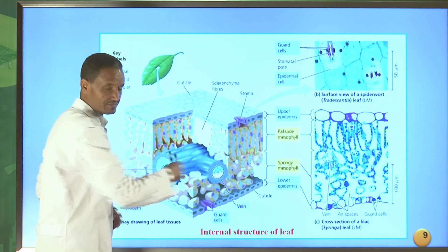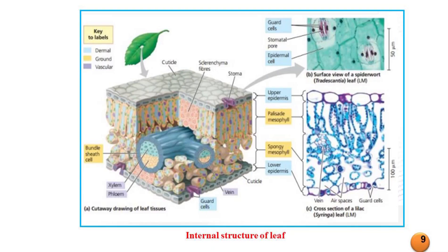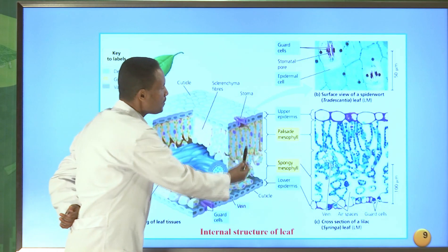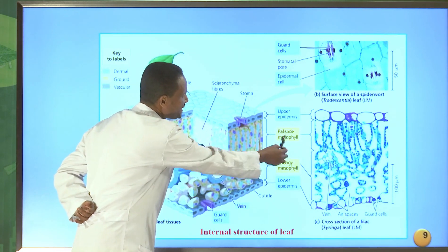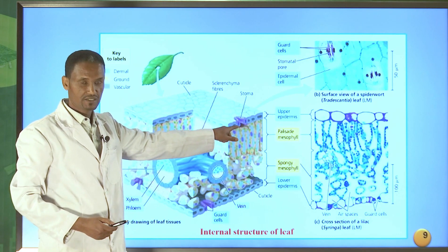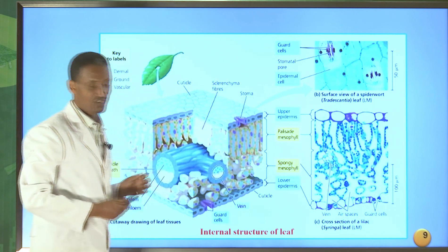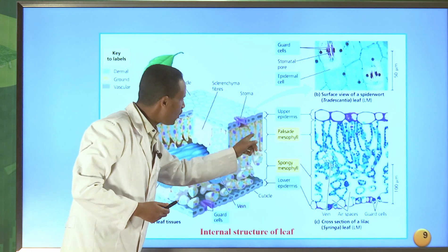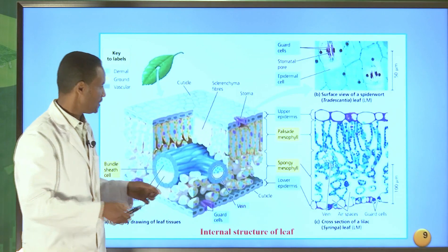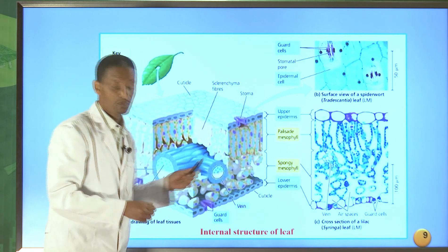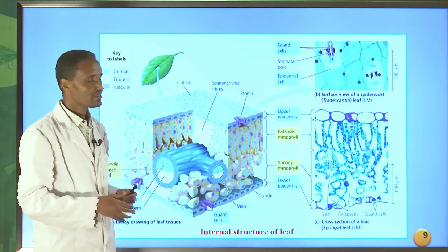Looking at a leaf cross-section diagram, the leaf has an upper epidermis and a lower epidermis. The mesophyll cells are found between the upper and lower epidermis. The palisade mesophyll is found near the upper epidermis, whereas the spongy mesophyll is below the palisade mesophyll. The cells of the palisade mesophyll are compact, whereas the spongy mesophyll cells have large air spaces between them — that is why it is called spongy.